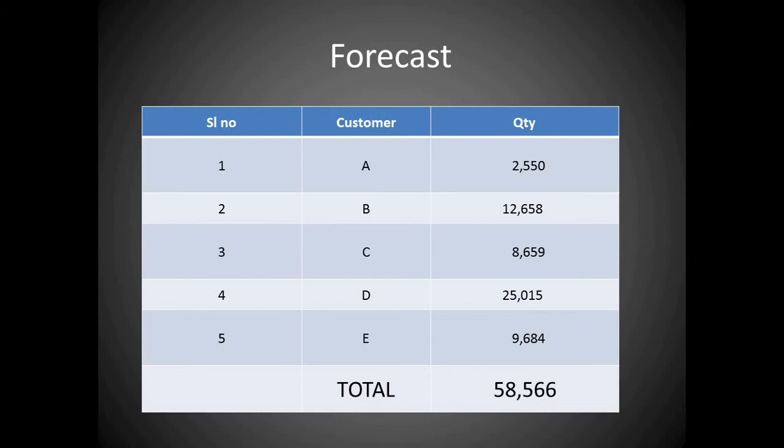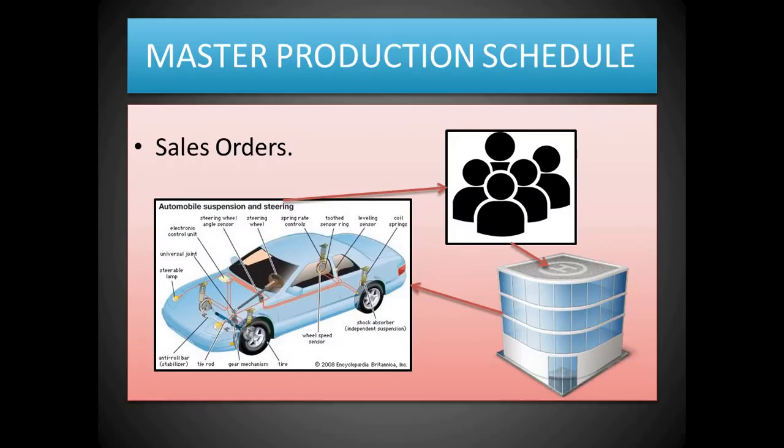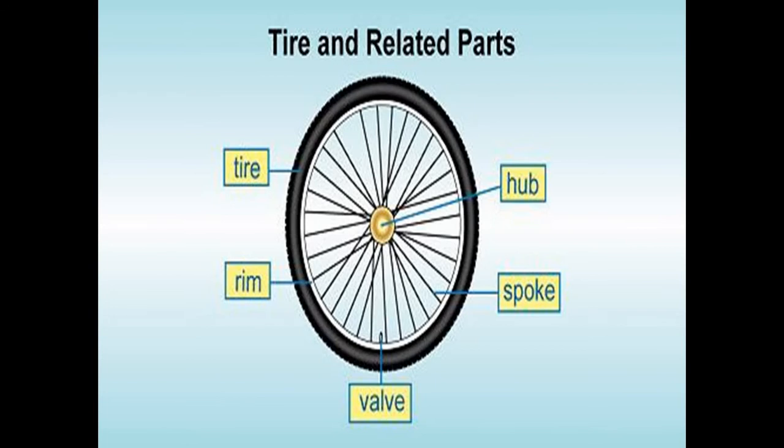For example, we assume we have five customers, five major customers. We have quantity of cars to be produced or sold to a particular customer. For customer A, 2.5K; for B, 12,658; for customer C, 8,659. There will be some forecast values, but we will concentrate in this video only on a particular component: Wheel, which is a part of a car.